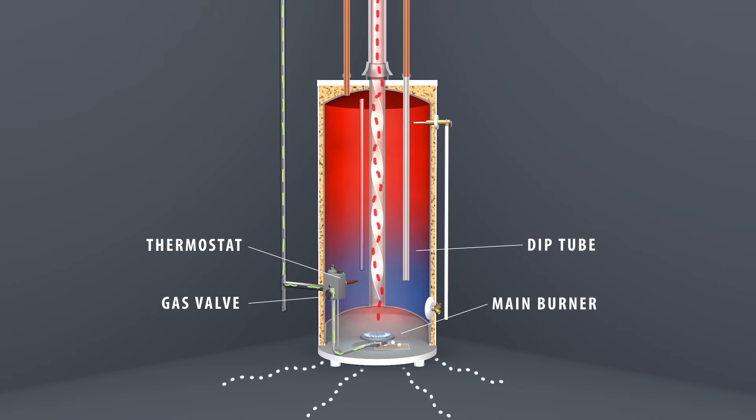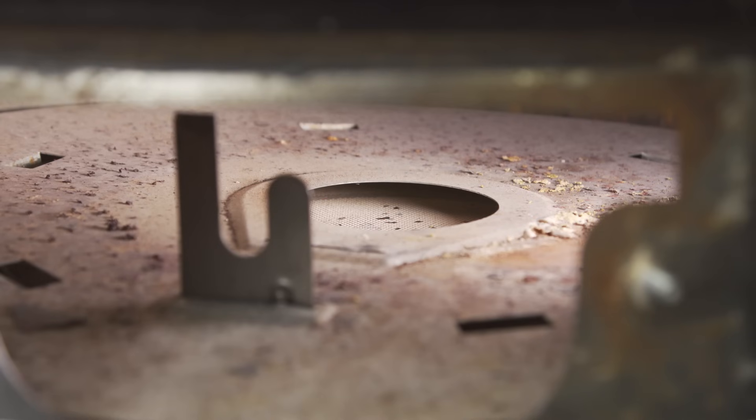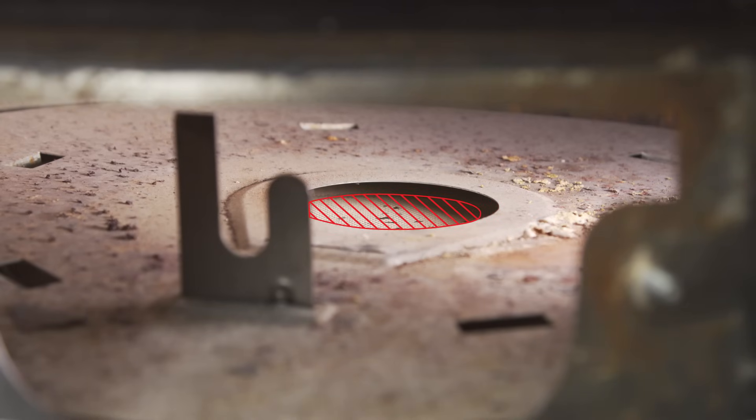If you have a standing pilot water heater, it's important to check that there is good air flow. On the bottom of the tank, air is brought in through a flame arrestor screen, which can get clogged with dust or debris. This can create backdrafting, which can cause the pilot to blow out.